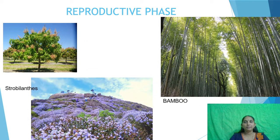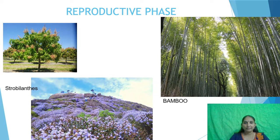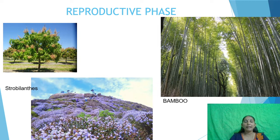Here I am showing some plants. The first is a mango tree, the second is bamboo, and below is strobilanthus. The mango plant takes a few years to reach the reproductive phase, and then every year there will be flowers. But what about bamboo?